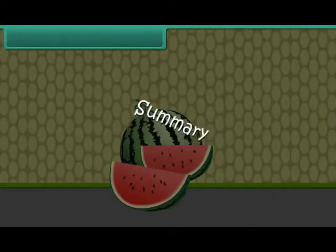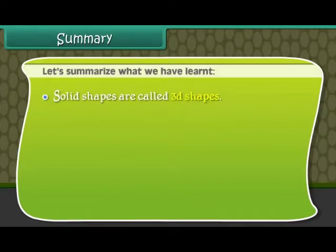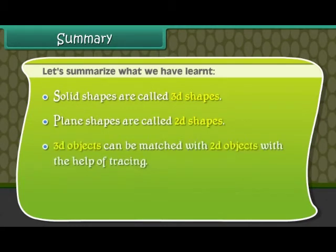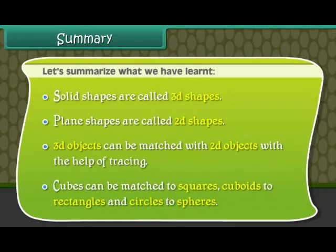Summary. Let us summarize what we have learned. Solid shapes are called 3D shapes. Plane shapes are called 2D shapes. 3D objects can be matched with 2D objects with the help of tracing. Cubes can be matched to squares, cuboids to rectangles, and circles to spheres.